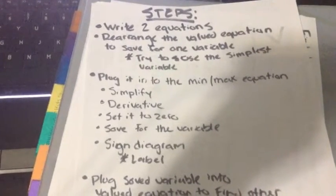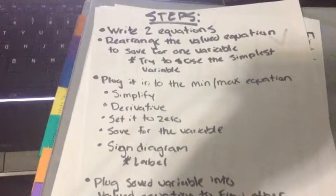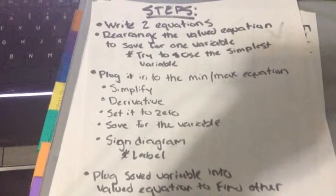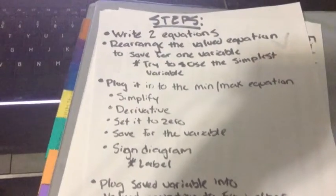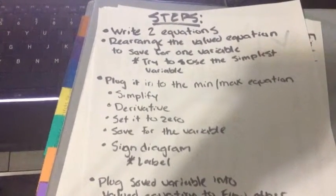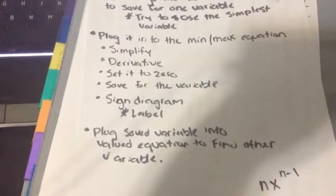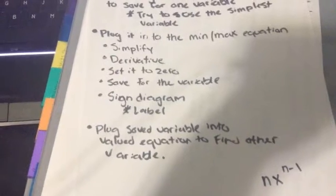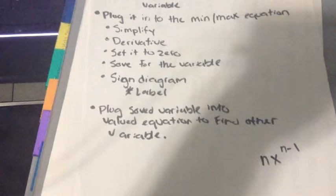So you first find out your two equations. Rearrange the equation to find a value for a valued equation. To solve that variable, try to use the simplest variable. Plug it into a minimum or maximum equation. Simplify. Find a derivative. Set to zero. Solve for a variable.